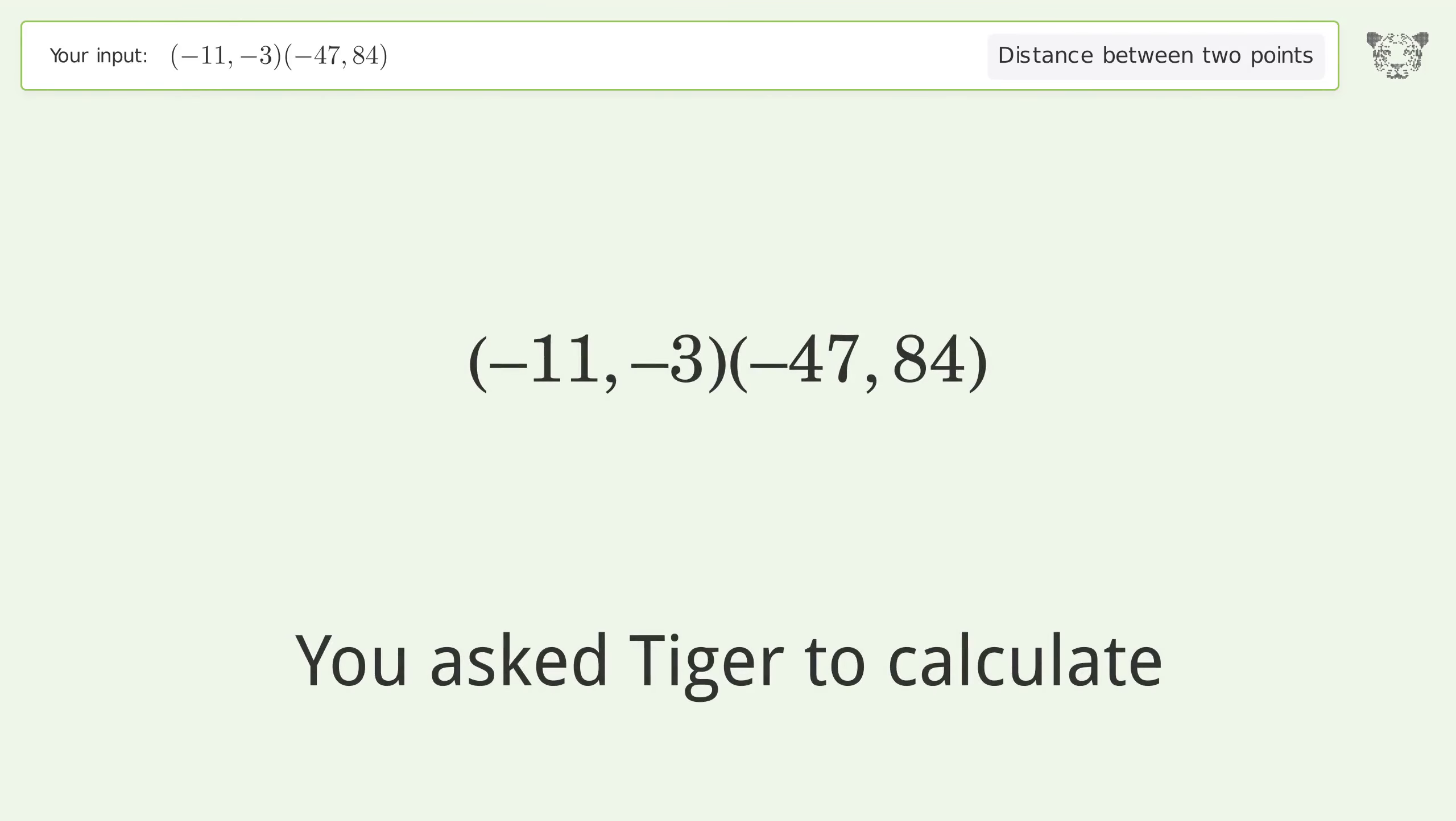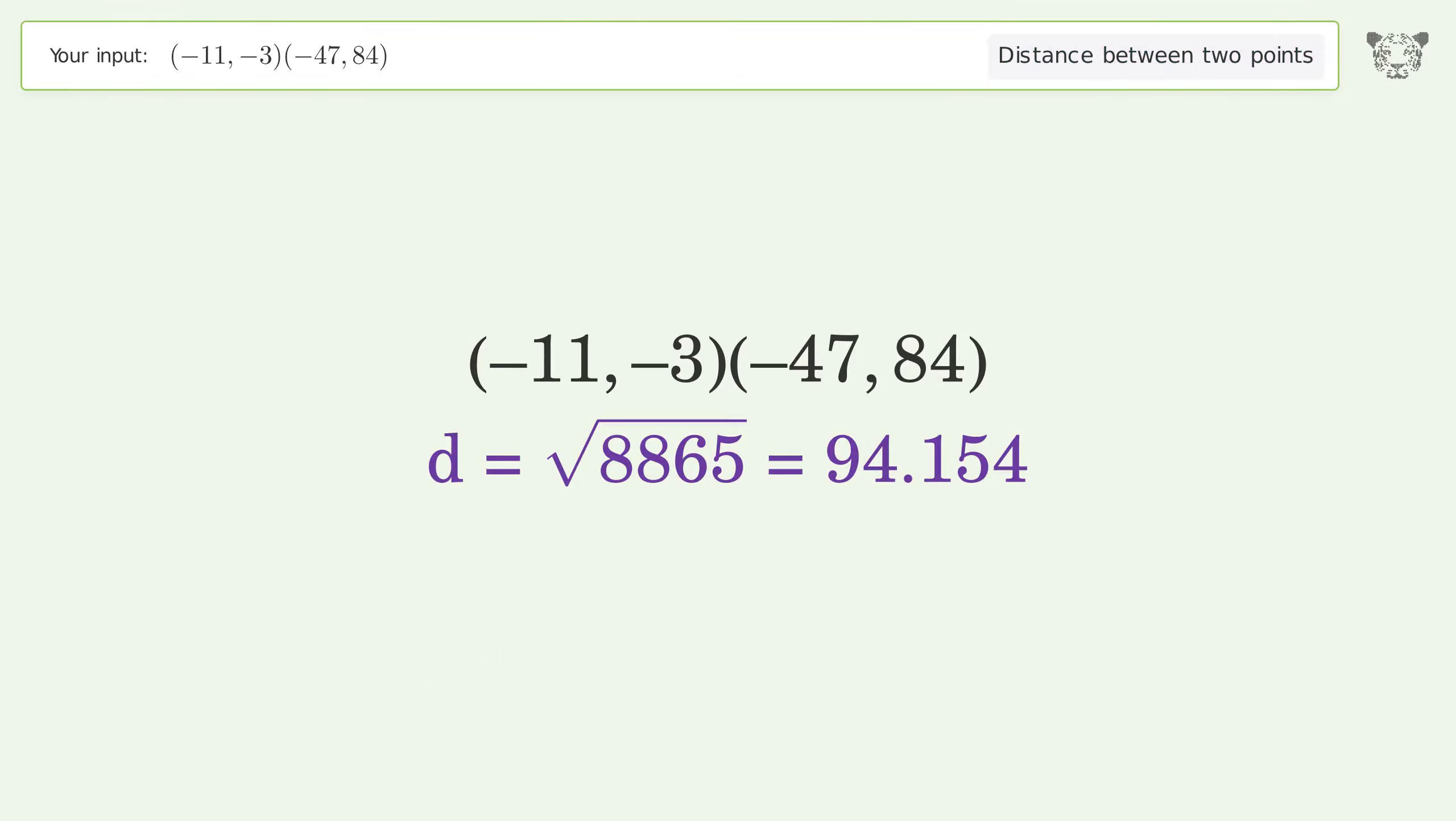You asked Tiger to calculate the distance between two points. The distance between the two points is the square root of 8,865 or 94.154.